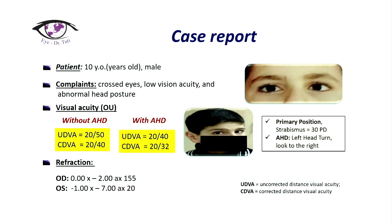Now let's start with the clinical case. This patient was a 10-year-old male. The main complaints from his parents were that the child was not looking straight — he was always trying to look from the side. His mother said he watches TV with his head in a very unusual position and she was always scolding him to look straight. Additionally, he had squint eyes and was wearing glasses.